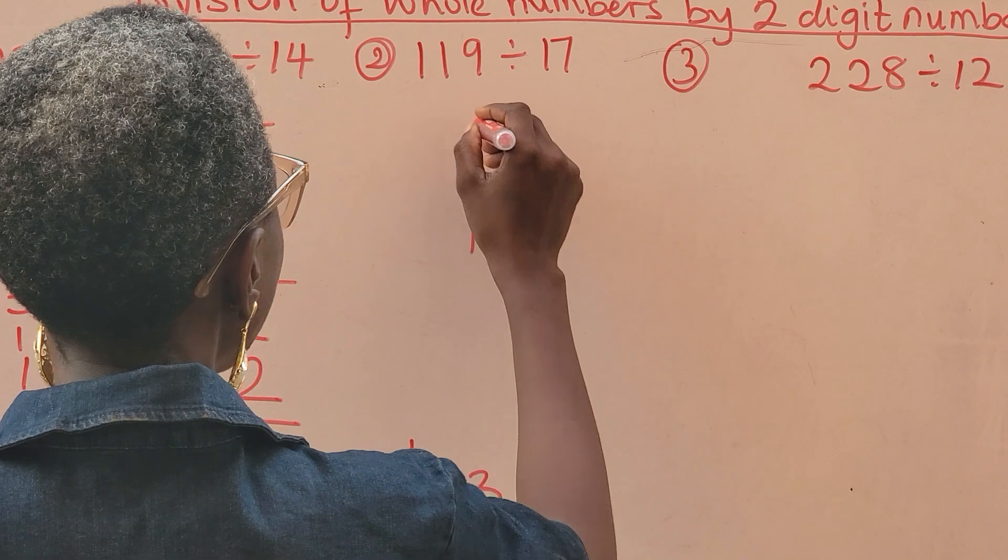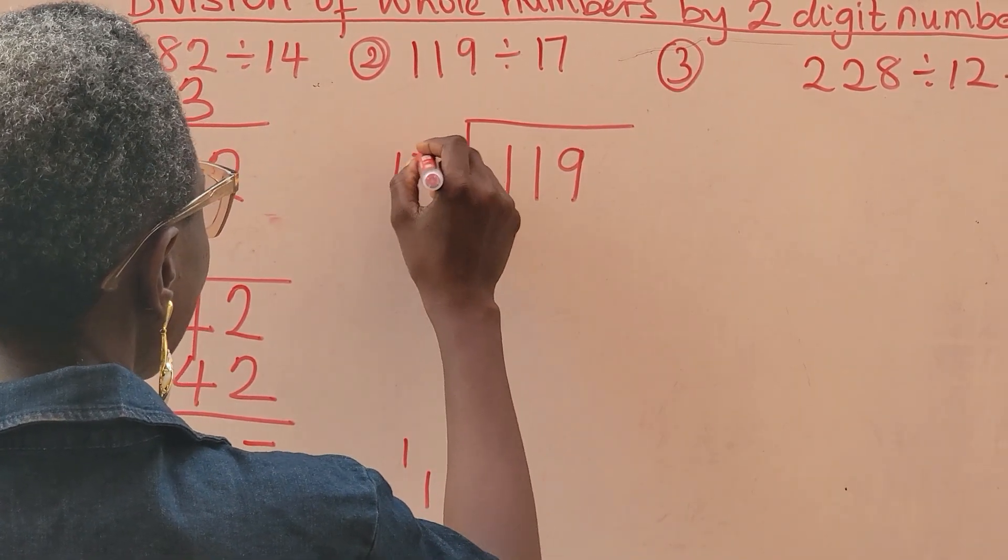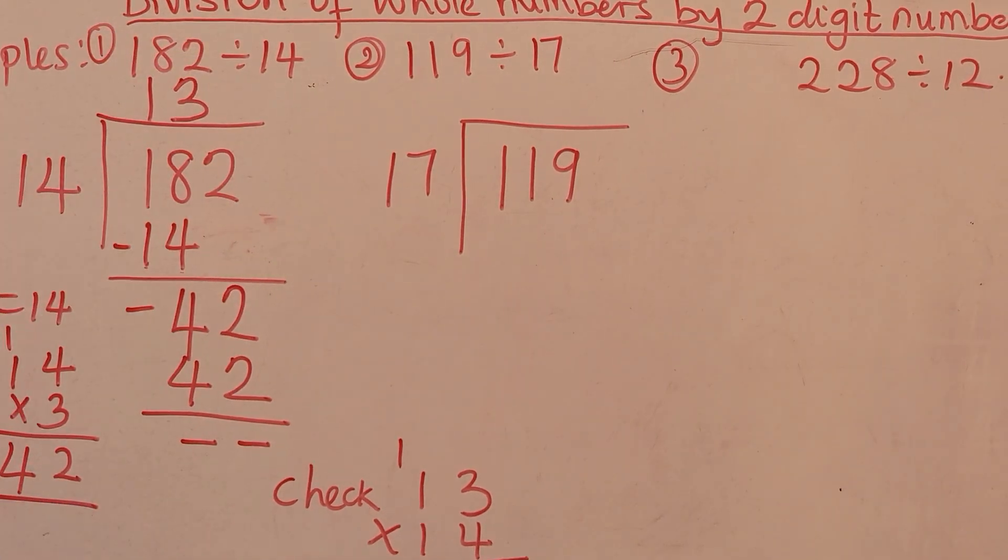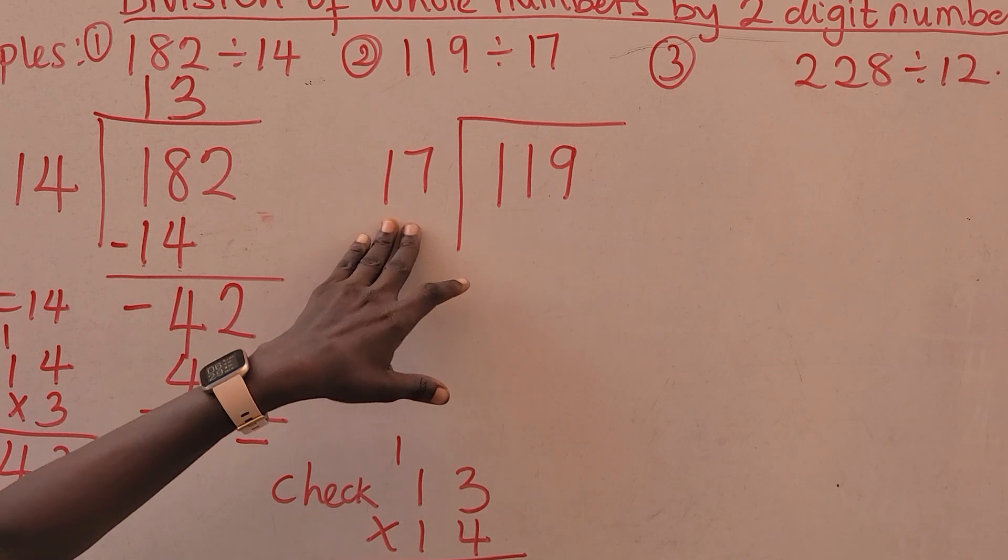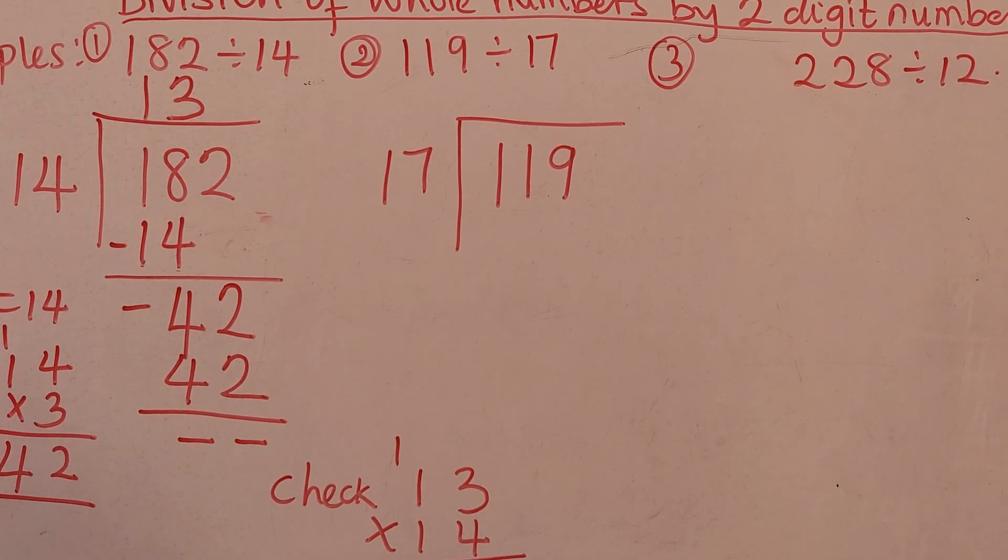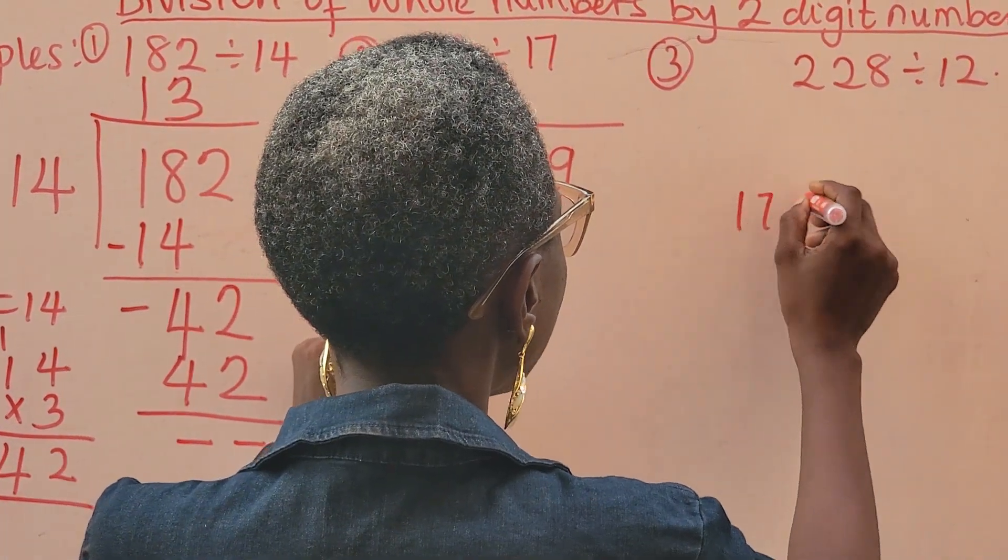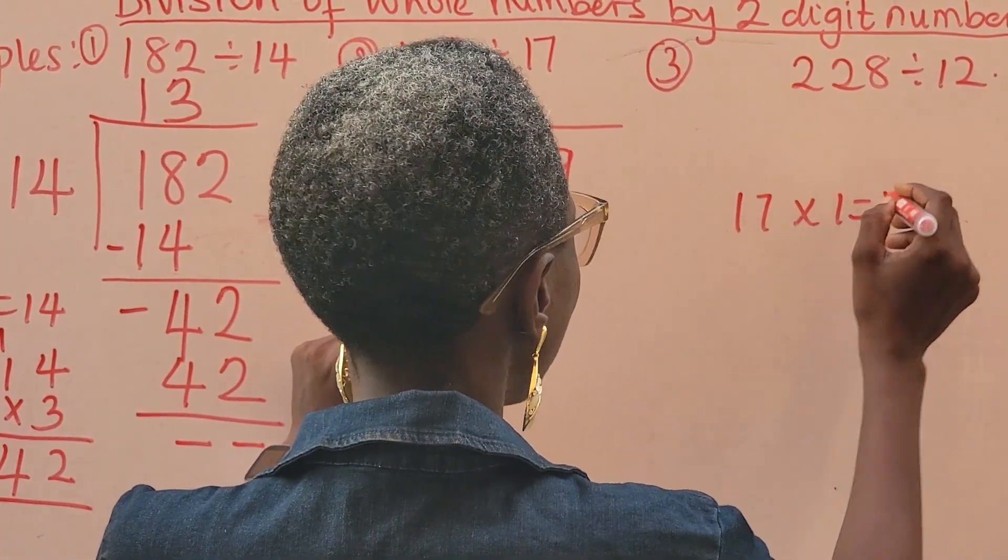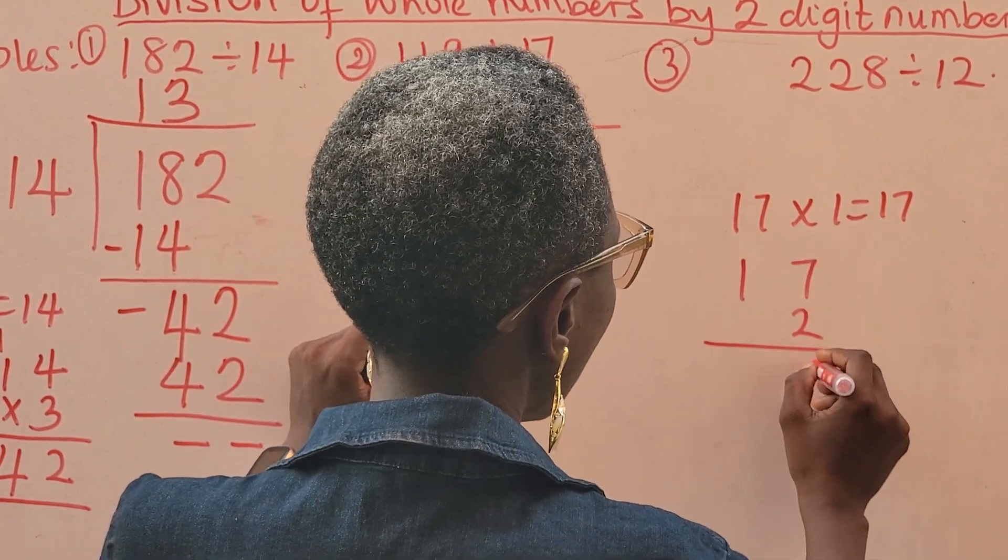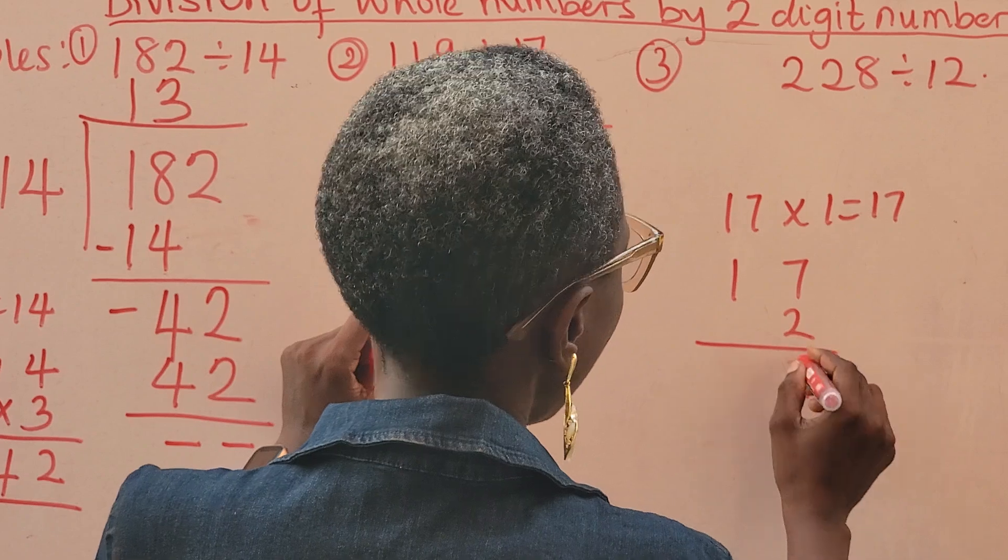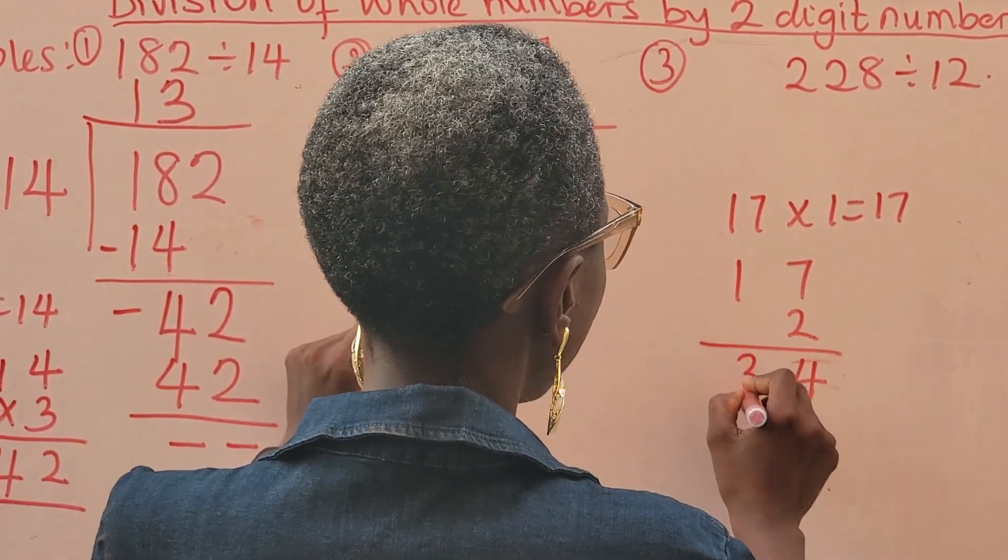Now, let's go to the next question. 119 divided by 17. In this case, I cannot pick two numbers because 11 is still smaller than 17. Then I do my table 17 just the way I did my table 14. What do I do? I'll say 17 times 1, which is still 17. 17 times 2. This is 14. And 2 times 1. That's 34.